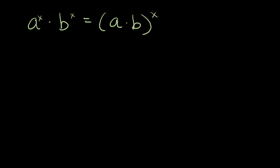This is saying that if you have two different numbers multiplied together and they both have the same exponent, you're going to multiply the two numbers together and then at the very end raise it to that exponent. I'm going to do some examples — positive and negative — and I think this is going to start making a lot more sense for you.